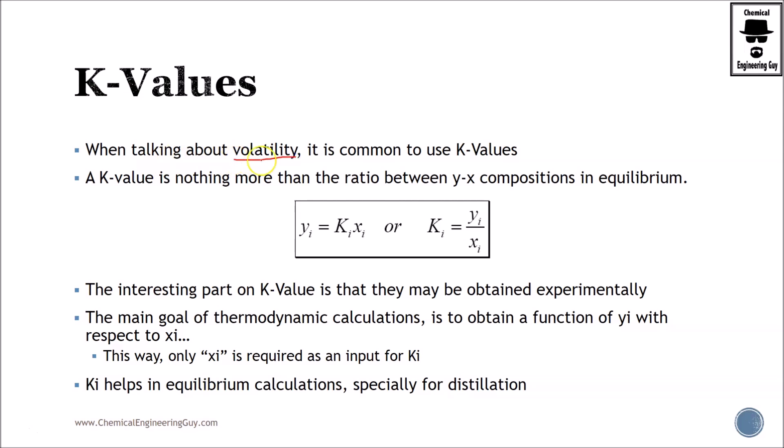Whenever we talk about volatility, we use this concept of K-values. Typically when you say a K-value is large, this will be a very volatile material, and when K-values are low, this means that this is not that volatile.